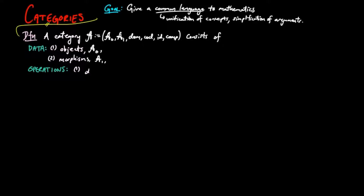Operations called the domain and codomain, which take amorphisms to A objects, and an operation called the identity from A objects to amorphisms, and a relation on triples of amorphisms called composition.